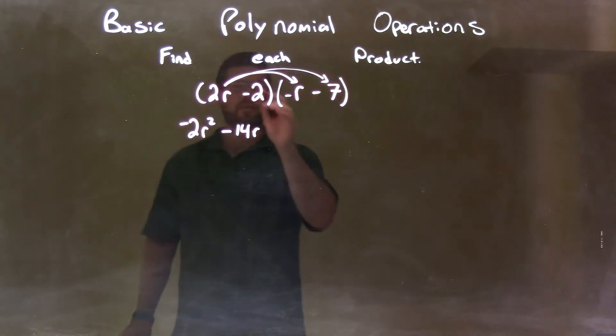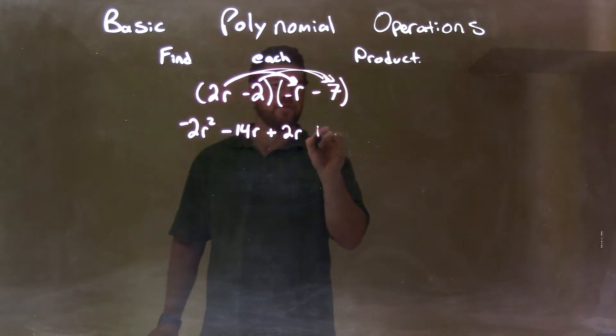Now we're done with the 2r, let's use the minus 2. Minus 2 times negative r is positive 2r, and negative 2 times negative 7 is positive 14.